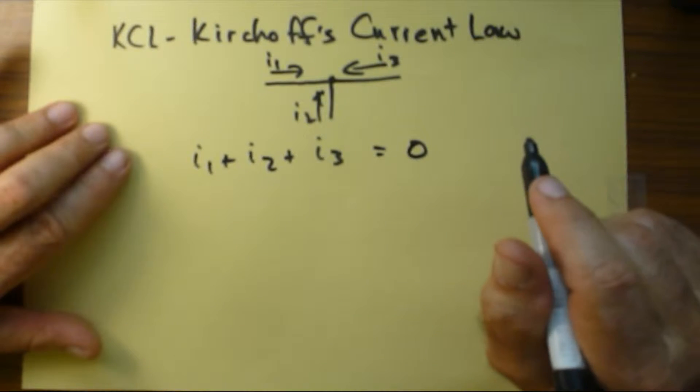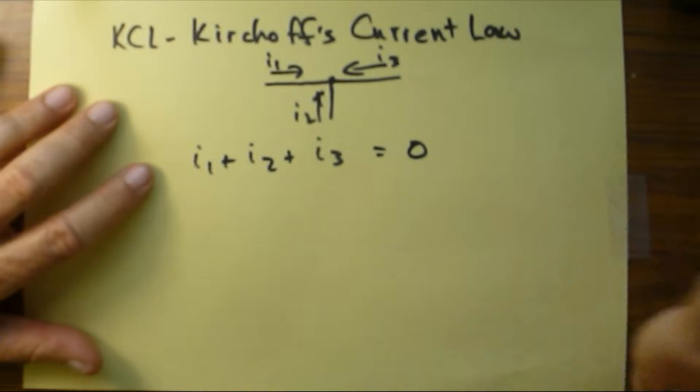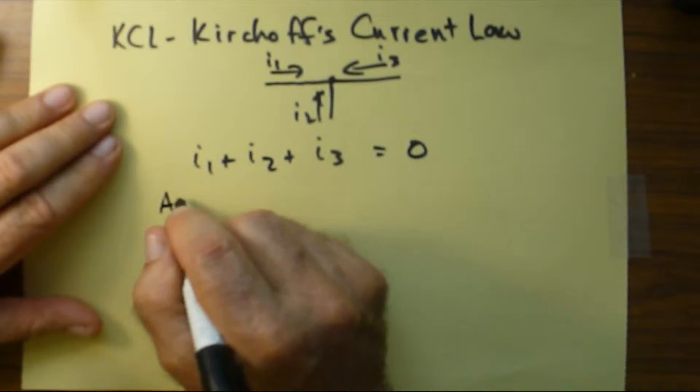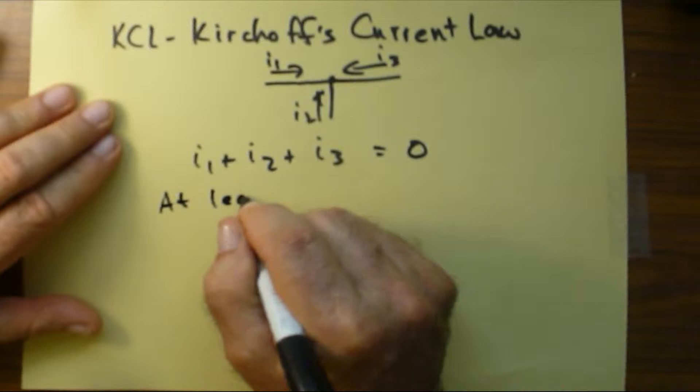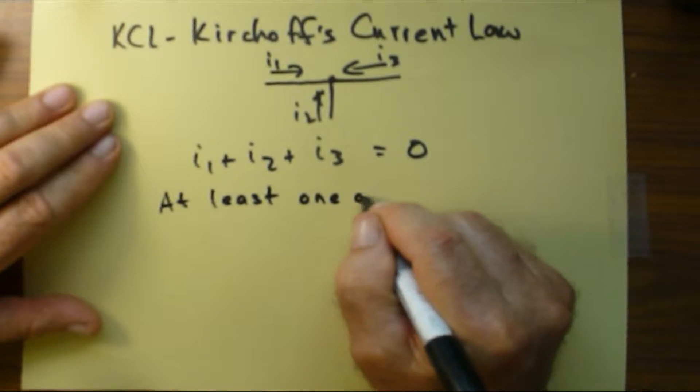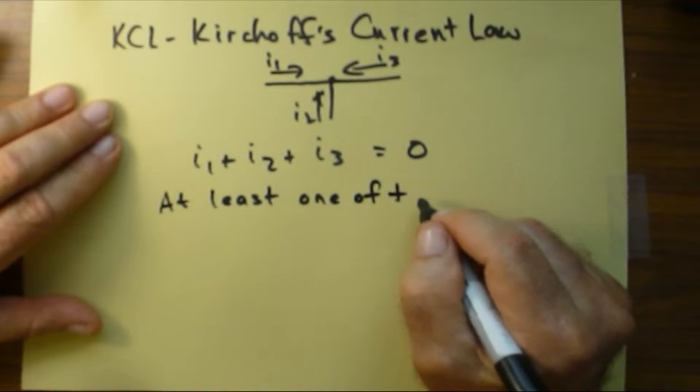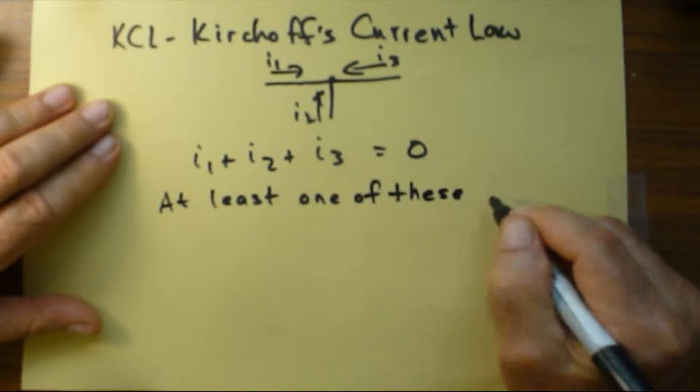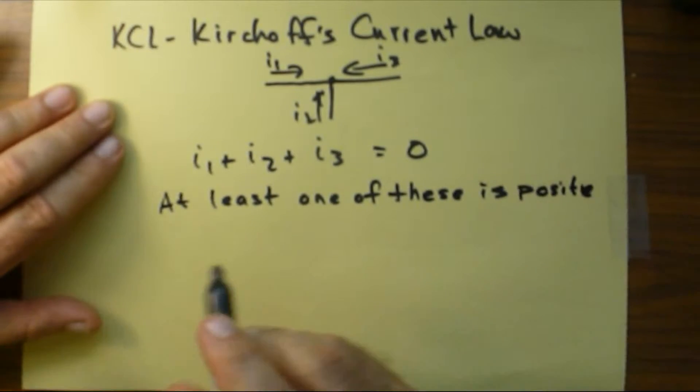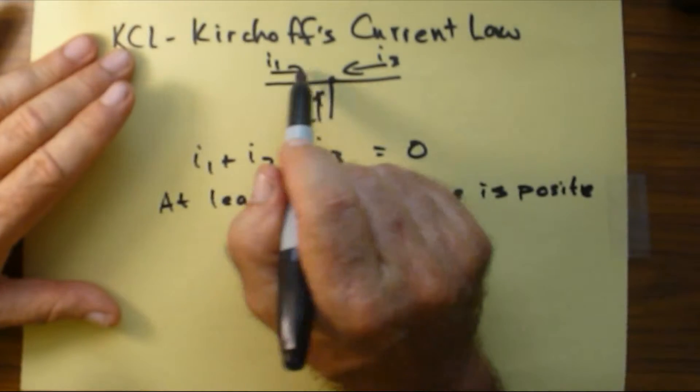Right away you're going to figure out that two things have to be true. At least one of these has to be positive, which means current flow is in the direction of the arrow.